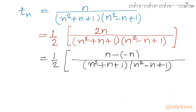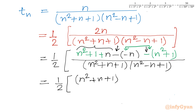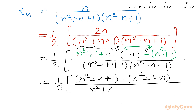I will add and subtract n²+1 to rewrite 2n in the numerator. Clubbing the terms together, I can write Tn = (1/2) times [(n²+n+1) - (n²-n+1)] over (n²+n+1)(n²-n+1), taking minus common from the relevant brackets, so the difference form appears in the numerator.